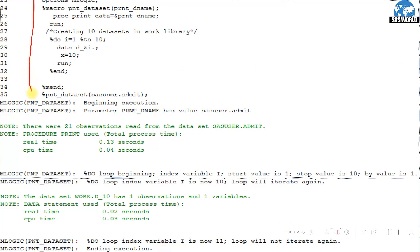This is the log. These are the usual statements. However, here we can see mlogic option showing beginning execution. The second statement is showing that when we are passing parameter, the value is sasuser.admit. Then there were 21 observations read from the dataset sasuser.admit. Then do loop is running. Mlogic is showing information regarding do loop. When the loop is starting, it shows percent do loop beginning, loop is beginning, index variable i is the index variable, start value is 1. When the loop is running first time, the value of i is 1 and it will run till 10, the end value is 10. The increment value is 1, by default.